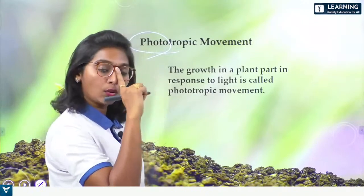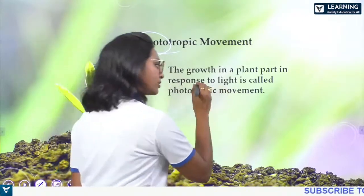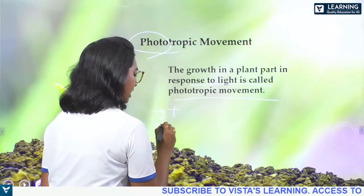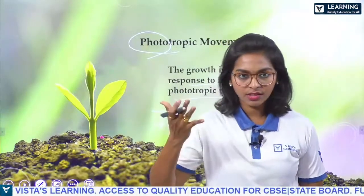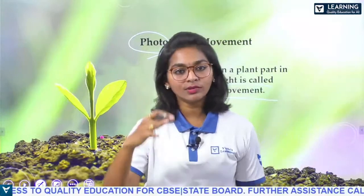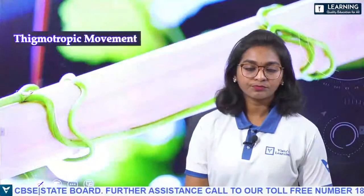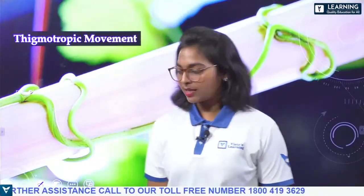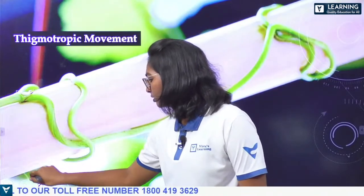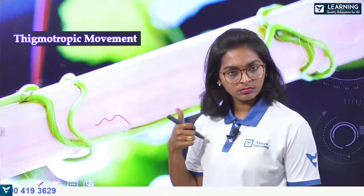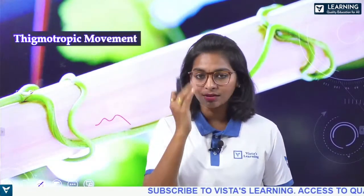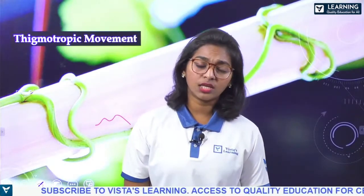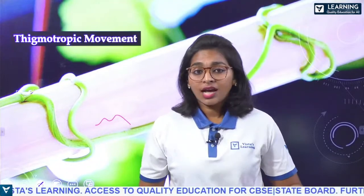Phototropic movement is growth in response to light. Shoots grow towards the light (positive phototropism) and roots grow away from light (negative phototropism). Thigmotropic movement is growth in response to touch. Climbers and creepers — which don't have a proper stem like a banyan or mango tree — exhibit thigmotropic movements.